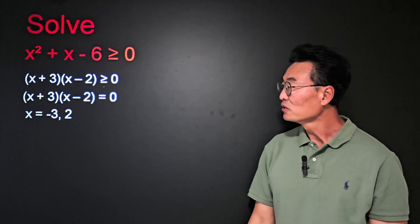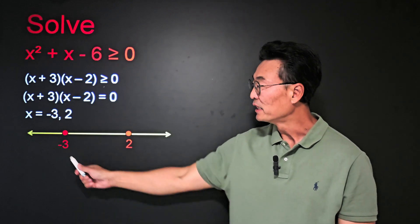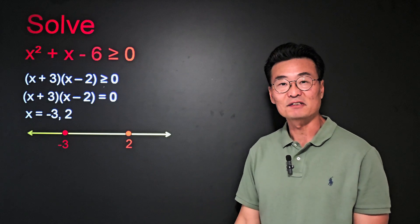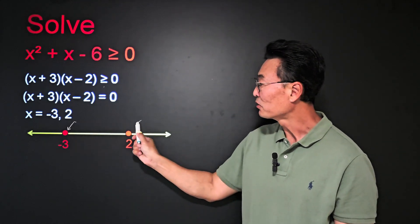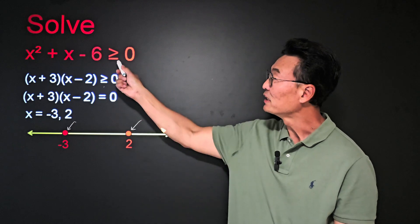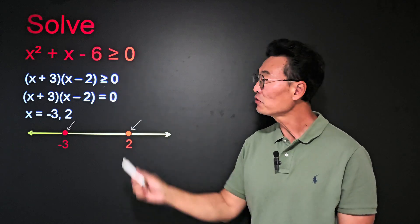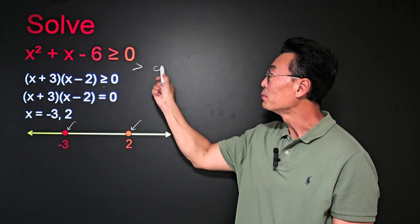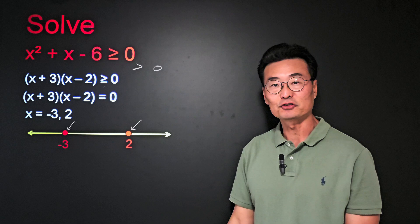Next, draw the number line and mark negative 3 and the 2, the x intercepts, and notice that the circles are closed because it's greater than or equal. If it was only greater, then it would have been open circles at negative 3 and 2.